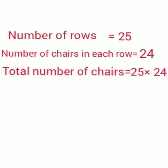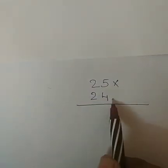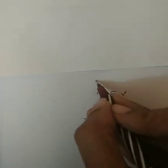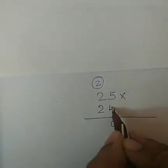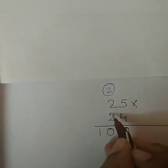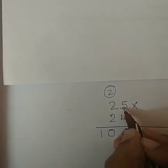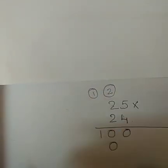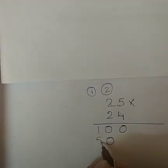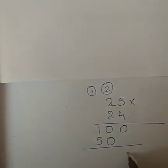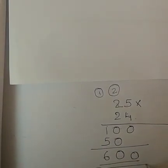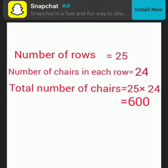How can we do this? Listen here. 25 into 24. First step: 4 into 5 is 20. We write 0 here and 2 as a reminder. Next step: 4 into 2 is 8, plus the reminder 2 equals 10 — write 0 and carry 1. Then 2 into 2 is 4, plus 1 equals 5. Final step is adding: 0 plus 0 is 0; 1 plus 5 is 6. So the answer is 600. Total number of chairs equals 600.